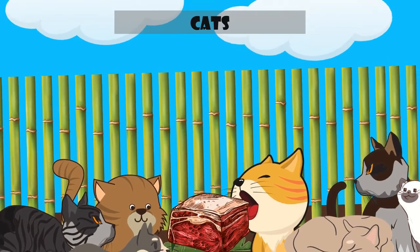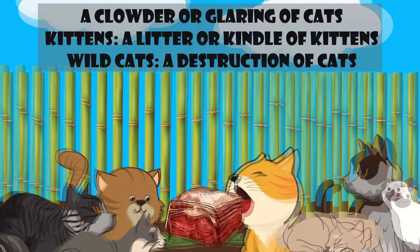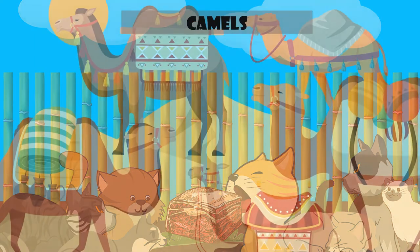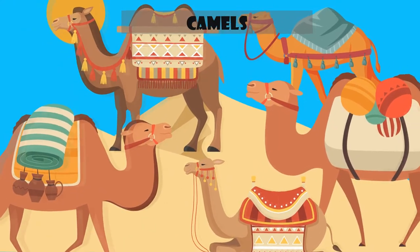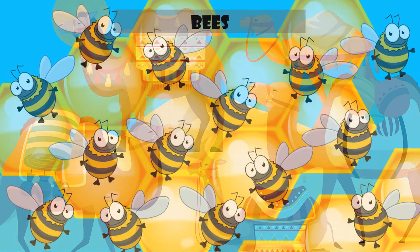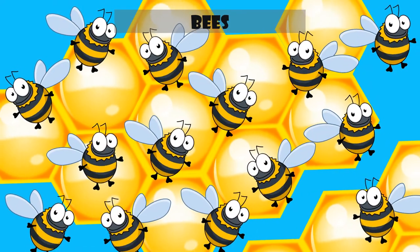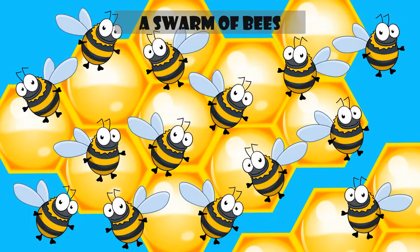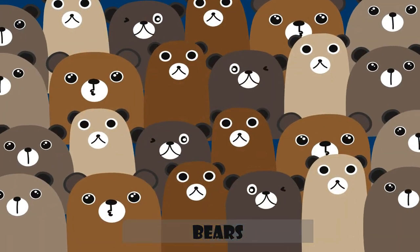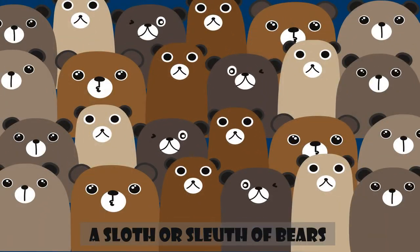A group of cats is called a clowder or a glaring of cats. If they're kittens, it's a litter or kindle of kittens. And if they're wild cats, a destruction of cats. A group of camels is called a caravan of camels. A group of bees is called a swarm of bees.